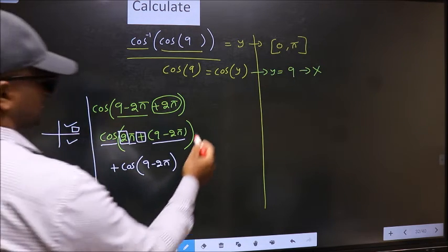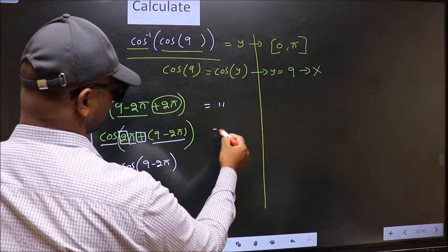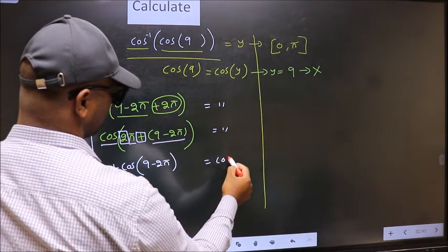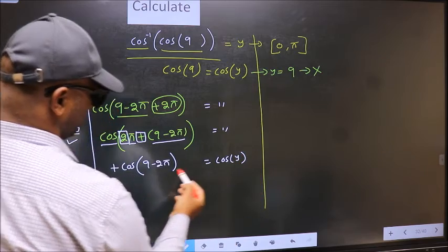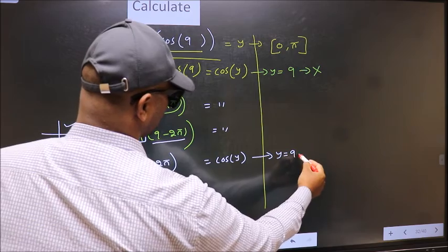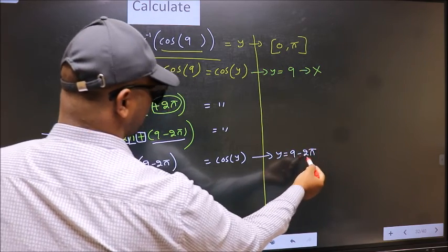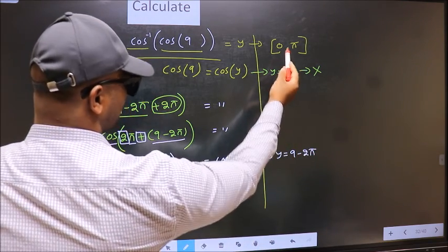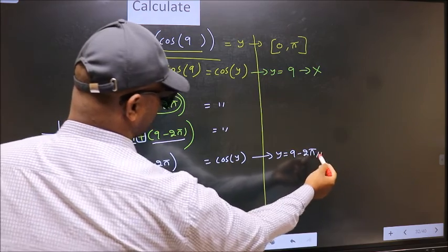Now on the other side, no change. Equal to cos y. Comparing both sides, we get y to be 9 minus 2 pi. Does this lie in this interval? Yes. So this is our answer.